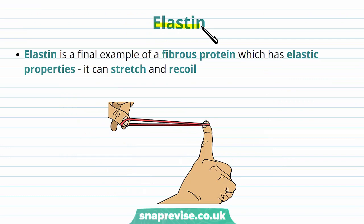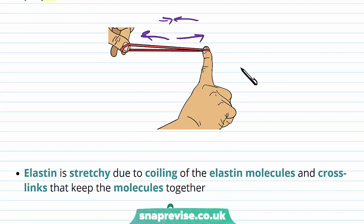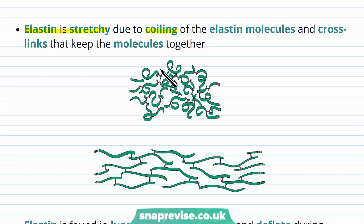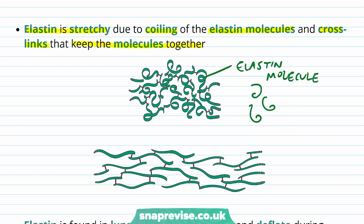Another example of a fibrous protein is elastin. Elastin has elastic properties — it can stretch and recoil, just like an elastic band. The reason elastin is stretchy is because it coils up when not under tension. The elastin molecules also cross-link to each other, keeping them together. Here is a tissue with elastin shown as green coils, each taking up a coiled structure; because they're cross-linked they won't separate when the tissue is under pressure.